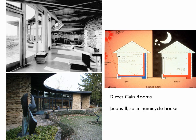Let's do a quick review of the four systems. First, direct gain rooms — the example being the Jacobs II house, also known as the solar hemicycle by Frank Lloyd Wright. Windows are your collection; the heat comes directly into the space. Structural elements like walls and floors become the thermal storage — we need a massive material or water, since lightweight material doesn't work well for storing energy. The heat heats up the mass, we insulate and close off the glazing at night, and then as surfaces cool, heat is released from the thermal storage medium back into the space on a 24-hour rhythm.